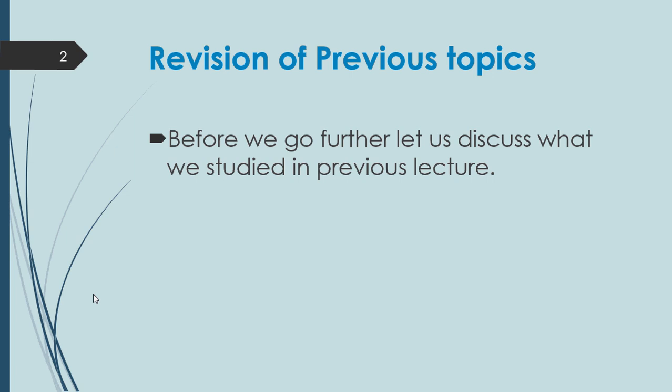We first discussed Chapter 5 introduction — orthopedic impairments resulting from neurological problems. Then we discussed 5.1 Cerebral Palsy including all its types. After that, we discussed 5.2 Spina Bifida, spinal cord injury, epilepsy, and head injury. Now lastly we have Multiple Sclerosis MS, which is the last topic of Chapter 5, and in this way we will complete Chapter 5.